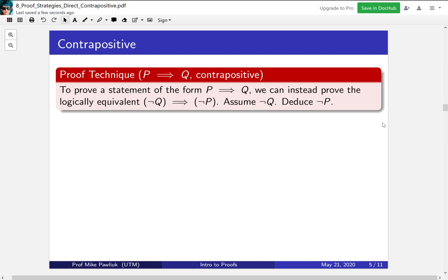This proof technique is allowed because we know that P implies Q is logically equivalent to not Q implies not P. In general, if two things are logically equivalent, you can prove one or the other. It doesn't matter. They're both fine.